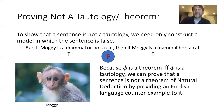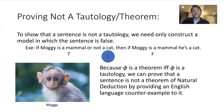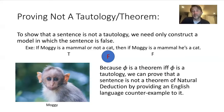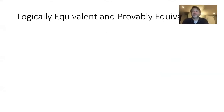Because phi is a theorem if and only if phi is a tautology, we can also prove that a sentence is not a theorem of natural deduction by providing an English language counterexample to it. Just as we could go from proving something was a theorem to determining it was a tautology, we can go in the other direction: if we can demonstrate that something is not a tautology, it follows that it is not a theorem. A counterexample is the best method for showing that something is not a tautology or not a theorem. There is a very important connection between the semantic notion and the more formal logical notion.